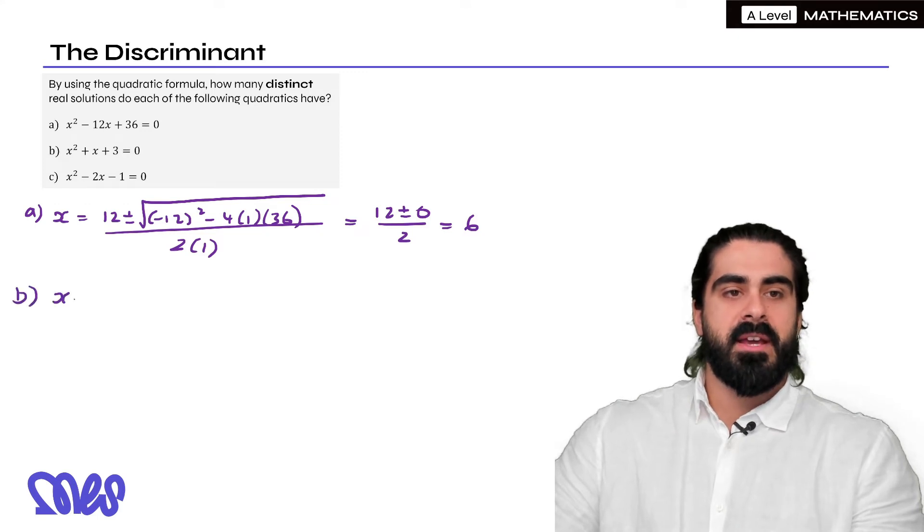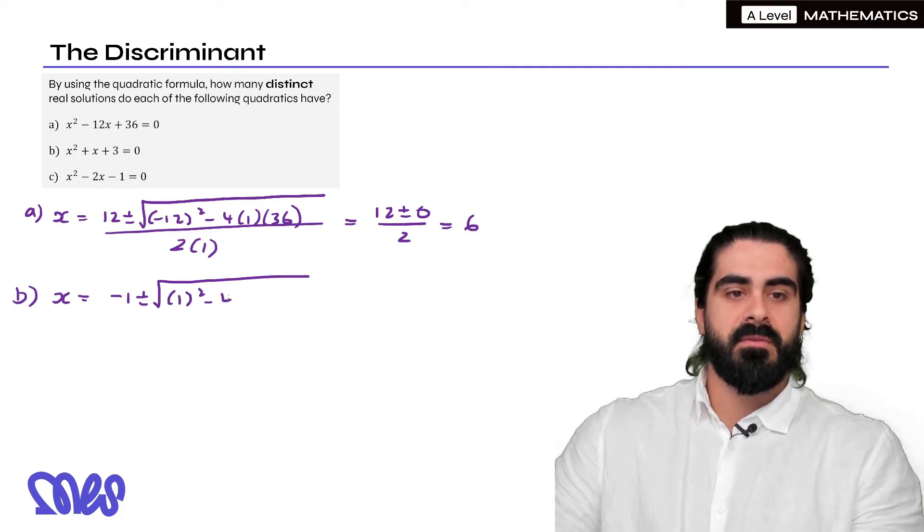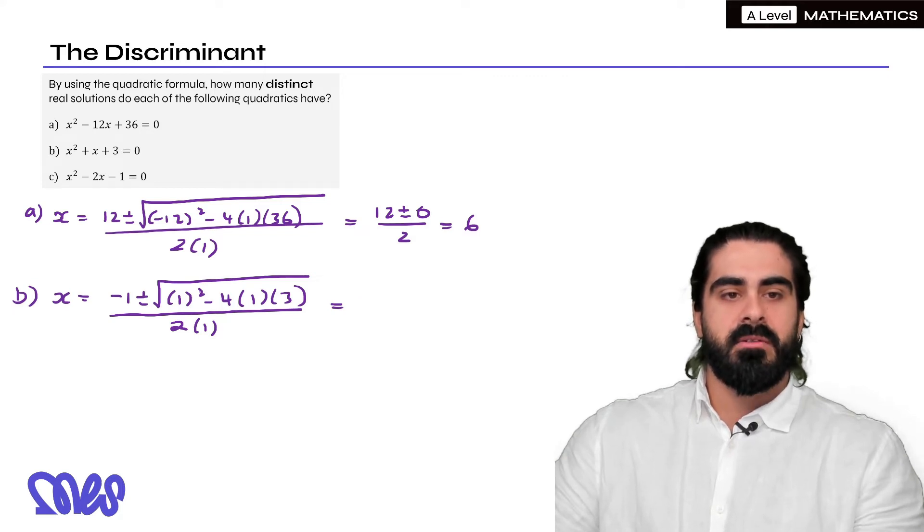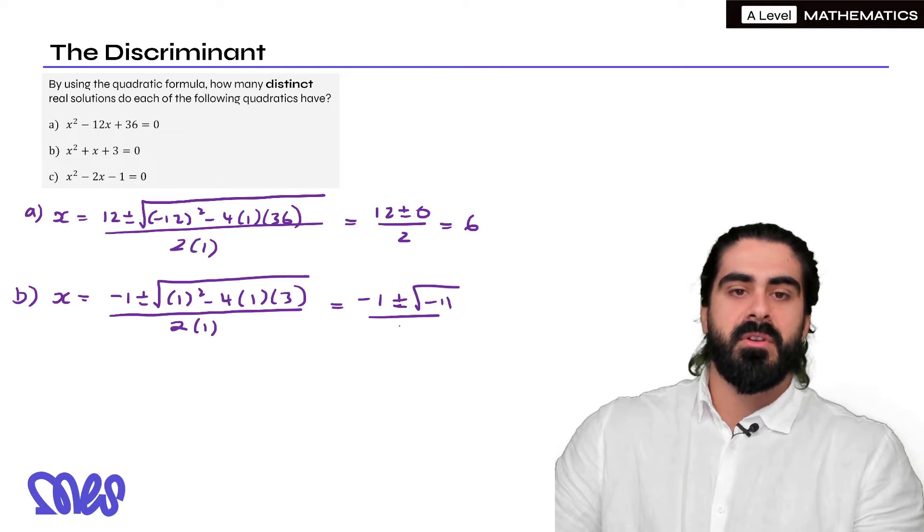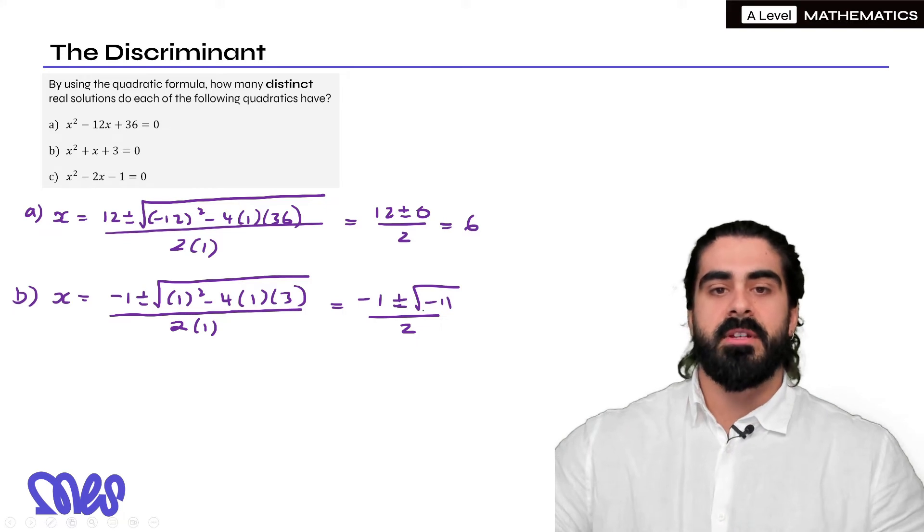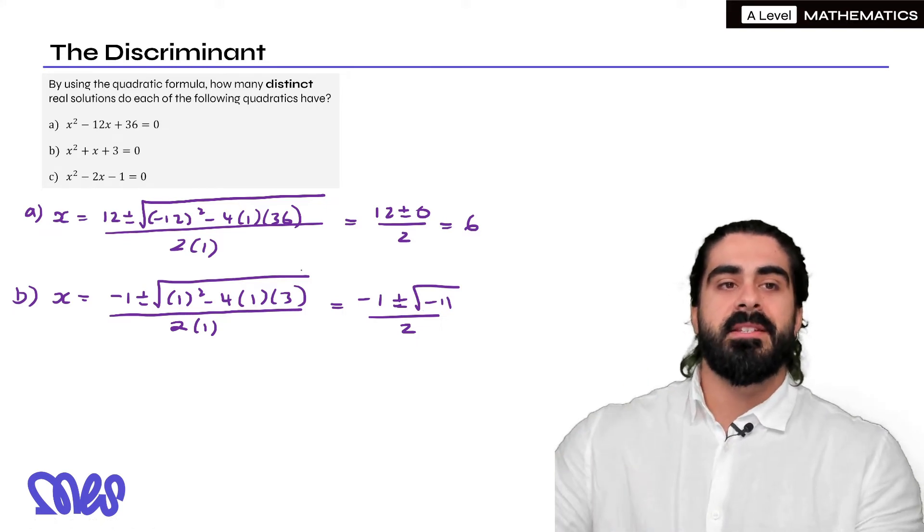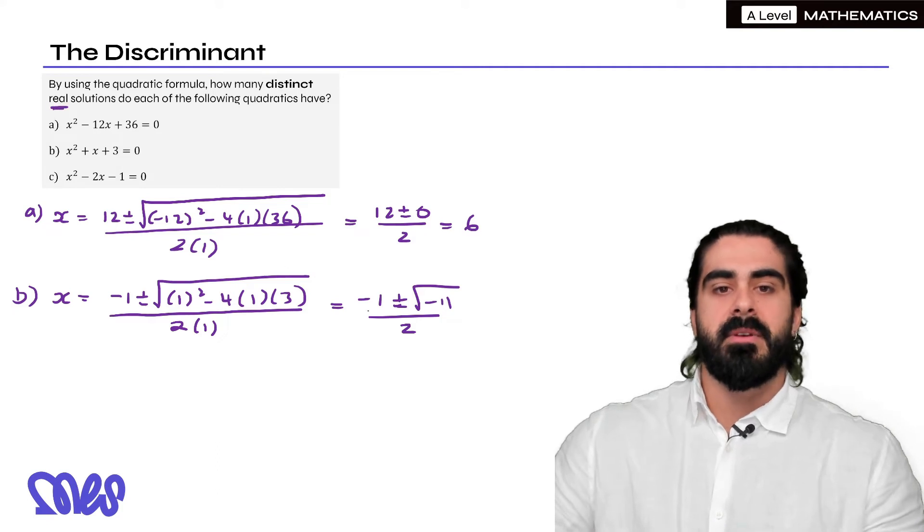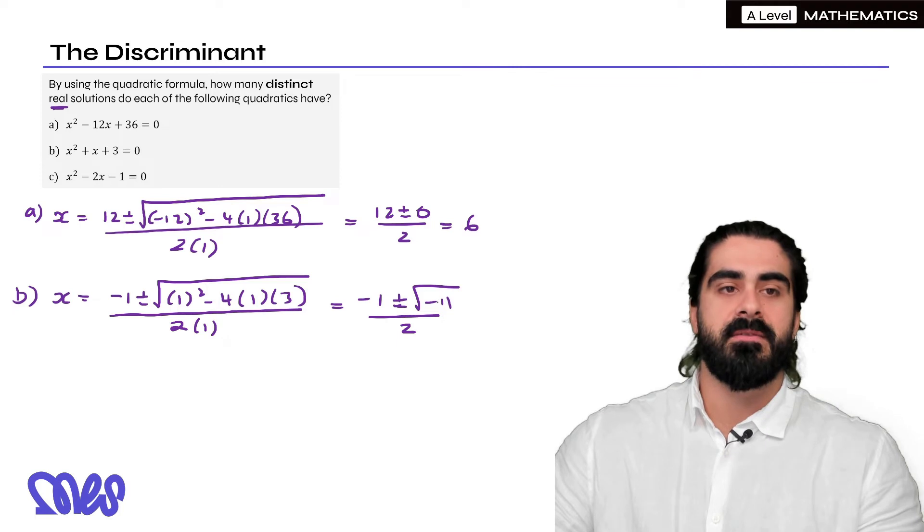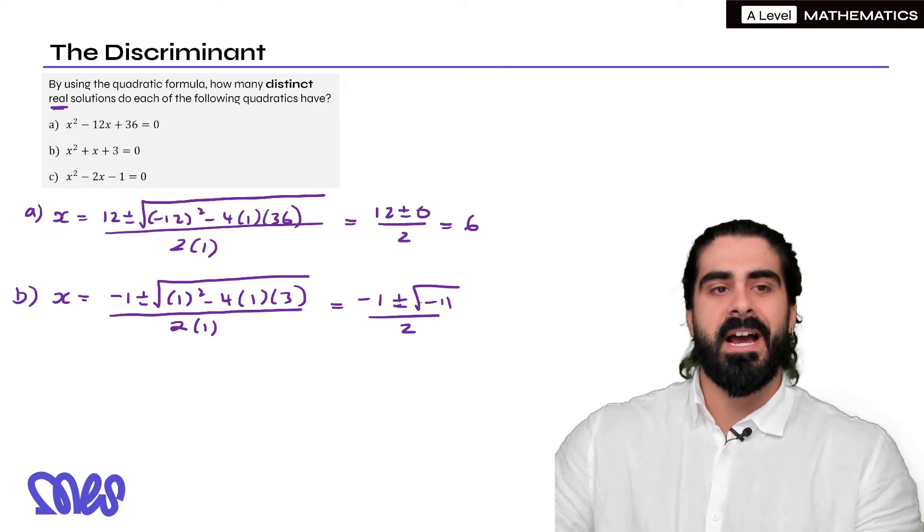Now for part b we have x equals the negative b plus or minus the square root of b squared minus 4ac all over 2a. Now in this case you're going to get 1 because 1 squared is 1 minus 4 times 3 so 1 minus 12 is minus 11. So you get 1 plus or minus root minus 11 over 2. Now here we can see that we can't square root negative numbers which is why we say distinct real solutions because in further maths we can move into complex numbers and this does have solutions but they're not real. So we have to say that this does not have any real solutions.